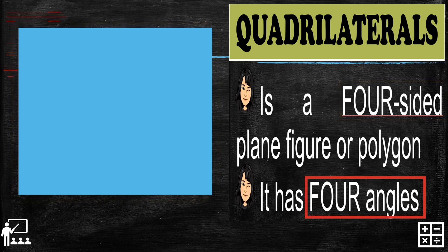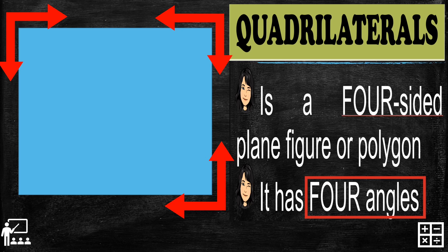So let's move on to the four angles of quadrilaterals. The first angle, second angle, third angle, and the fourth angle. So there are four angles in a quadrilateral.